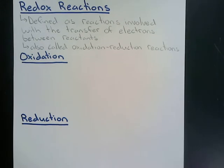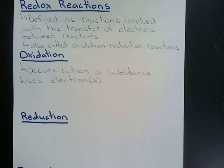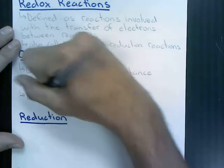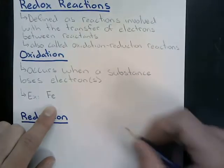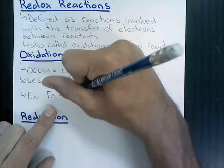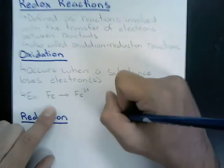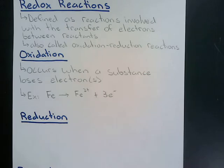Oxidation occurs when a substance loses an electron. For example, solid iron (Fe) with no charge — if it undergoes oxidation and loses three electrons, it would become an Fe3+ ion. Those three electrons would be donated to another reactant in the redox reaction.